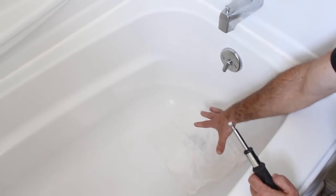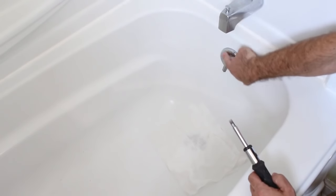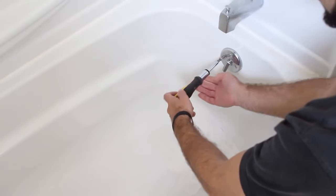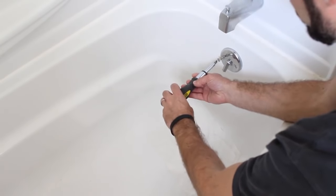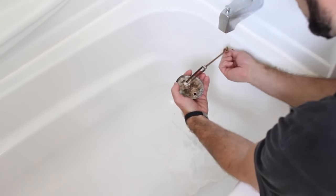You want to place a paper towel over the bathtub drain because you're going to remove the screws from the overflow valve here. The last thing you need is for a screw to fall down the drain. Once you remove the screws, you can pull out the lever and the plunger.